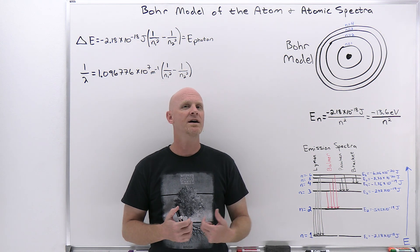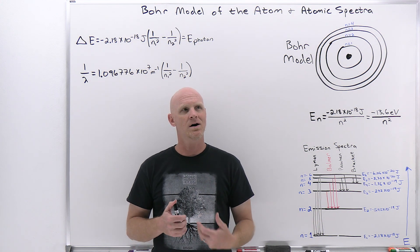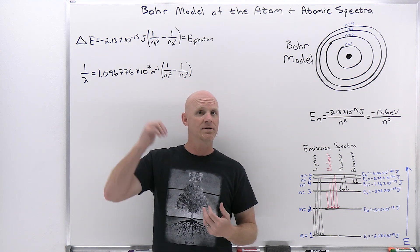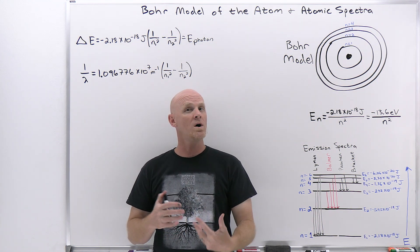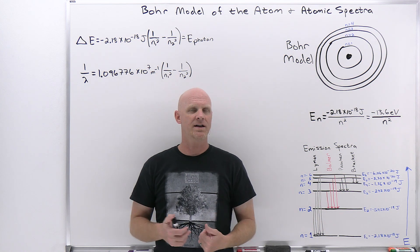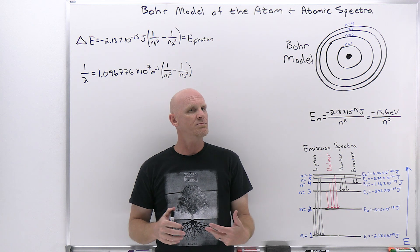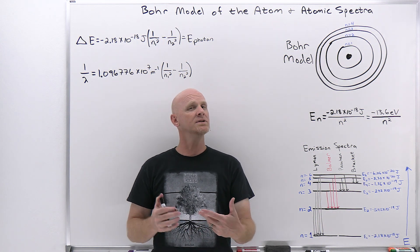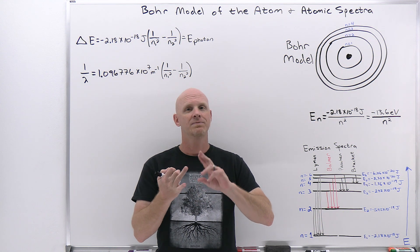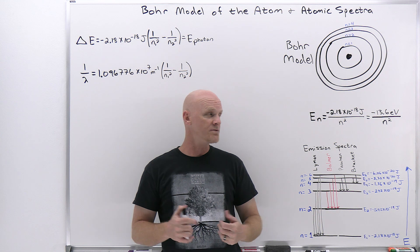Bohr was able to explain the data specifically for hydrogen, but his model didn't work for anything having more than one electron. If you took a heavier element and peeled off all electrons except one, he could make an equation for that. But for anything with two or more electrons, his model completely broke down. We now know there are problems with his model and it's not completely correct, but we give him tremendous credit: he fit the data and proposed a quantized model, which is indeed true of nature.